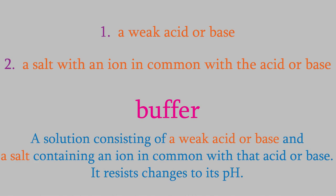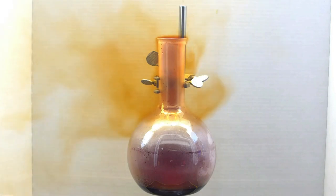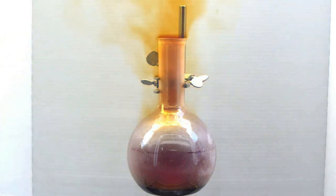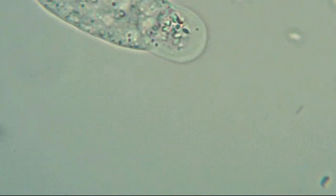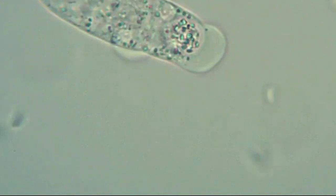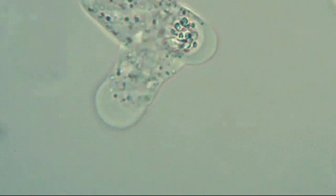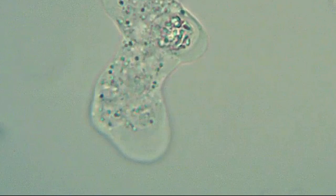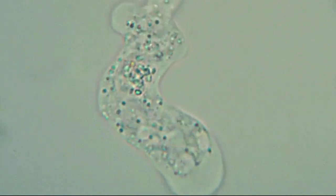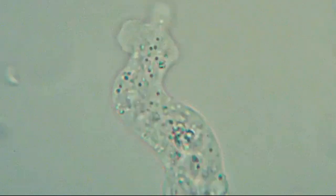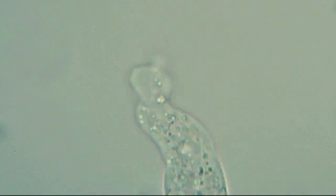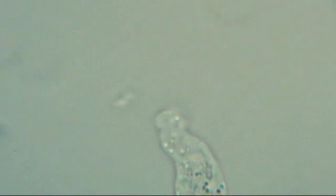So why do we care so much about buffers? Lots of chemical reactions can only take place over a small range of pHs, and many cells and single-celled organisms can only live at certain pHs, so we need to control the pH of solutions used to grow cells or perform chemical reactions. In the next video, we'll find out how to make a buffer with a specific target pH, so we can design buffers exactly suited to our experiments. I hope you'll join me for that — but until then, have a good week.